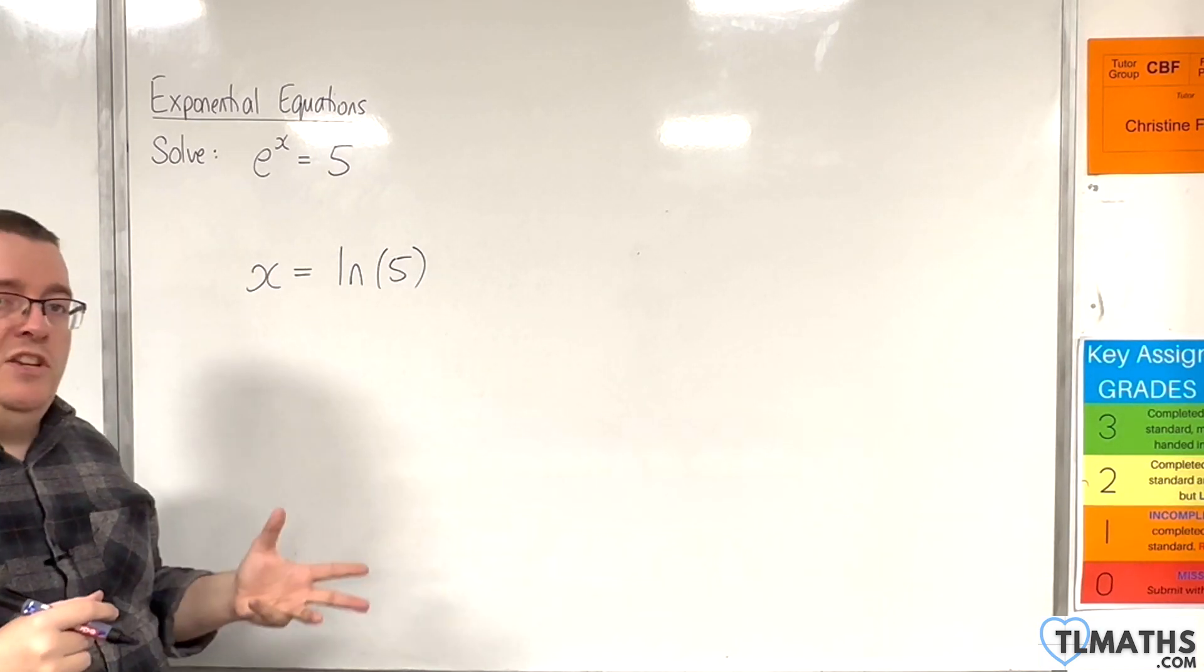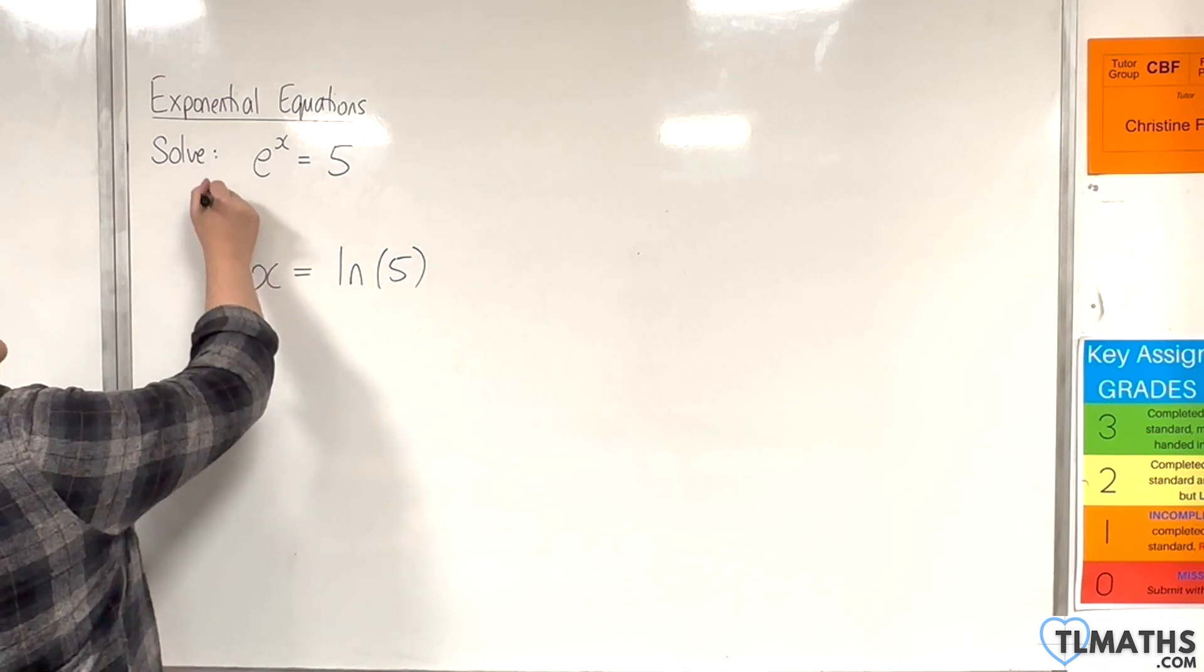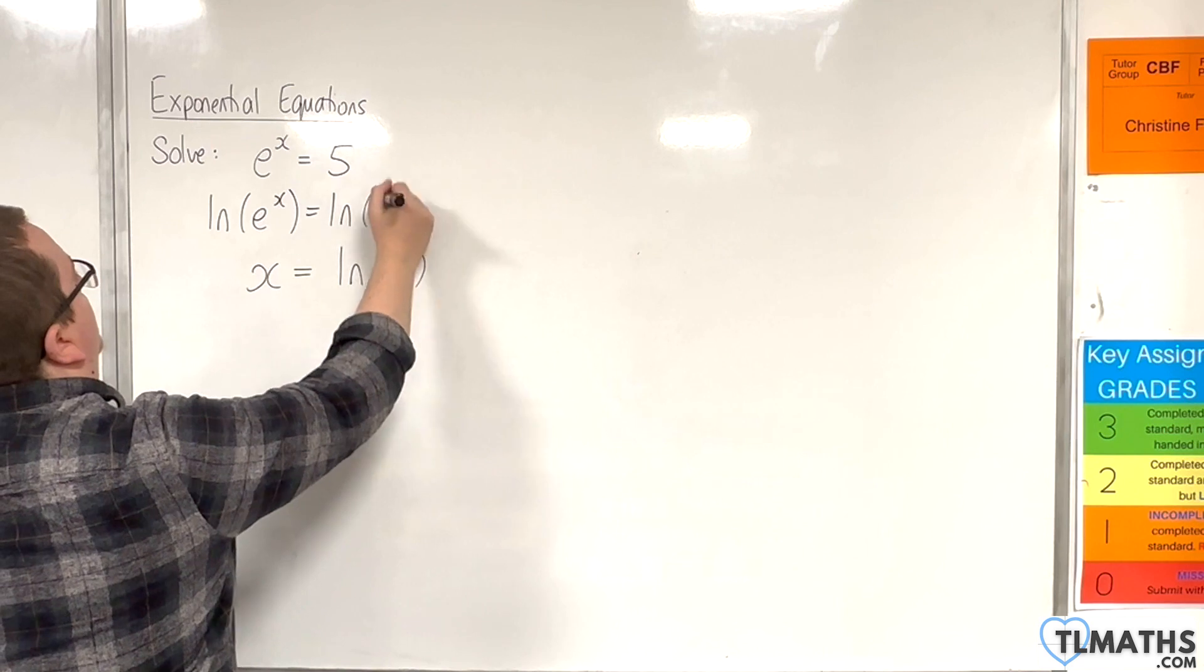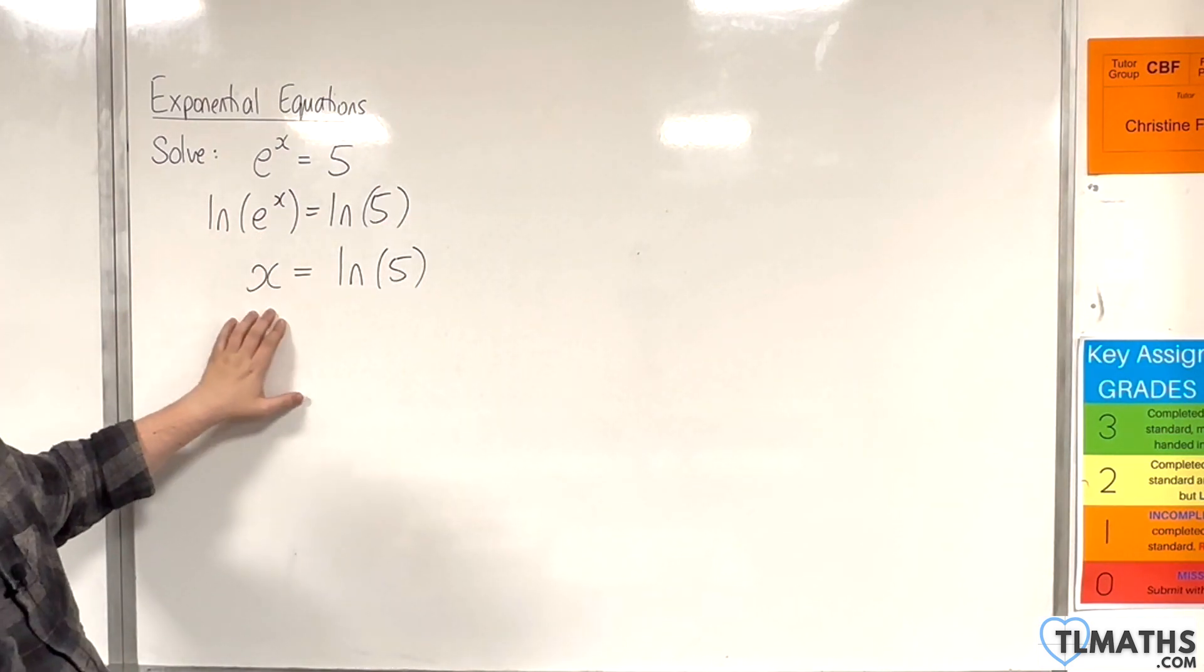Now essentially what we're doing is we are logging both sides using ln. So ln of e to the x is equal to ln of 5. And ln of e to the x is just x.